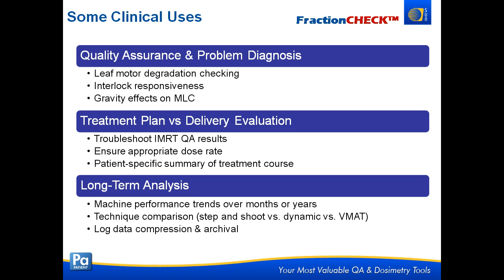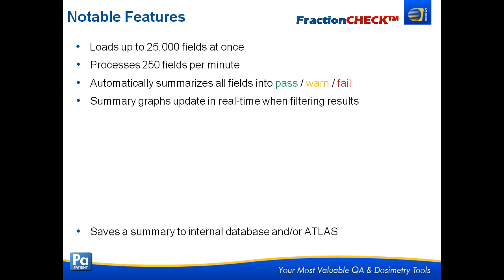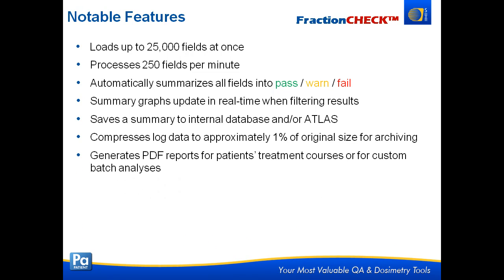For long-term analysis, physicists who would like to see how their machines performed over months or years — FractionCheck can handle around 25,000 files. You can compare different techniques: VMAT, dynamic, step and shoot. You can compress your log data for archiving purposes. Some statistics: we can load 25,000 fields at one time, process about 250 fields a minute — a very fast analysis designed to handle thousands and thousands of fields at once. Everything is summarized into pass, warn, or failed results. We generate graphs that update in real-time when you sort and filter results, save a summary to the internal database or Atlas. Compressing log data results in files that are about 1% of the original size, so you don't have to throw away those Dynalog files. We generate PDF reports for patient treatment courses or custom analyses.